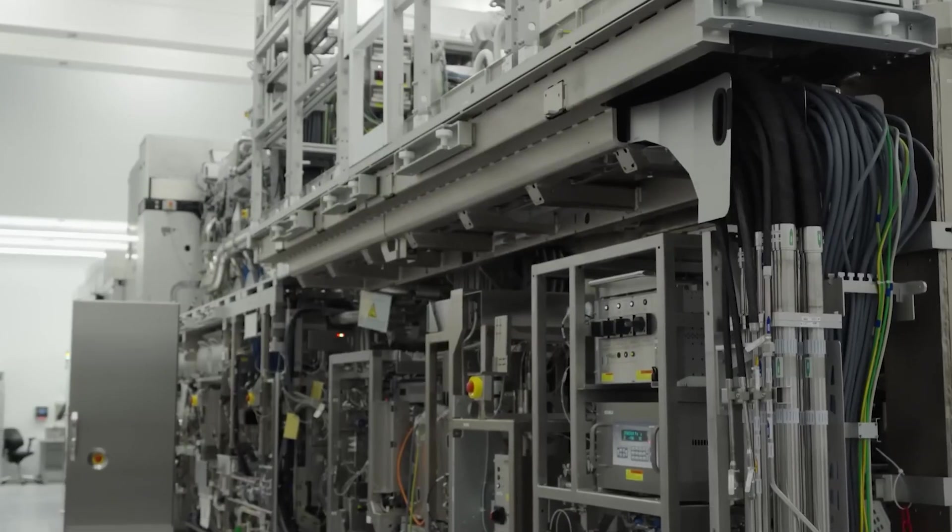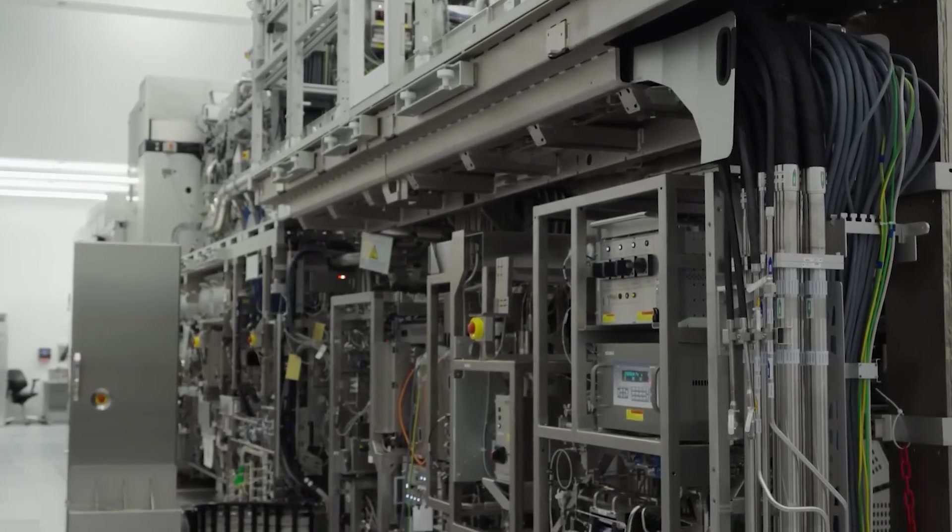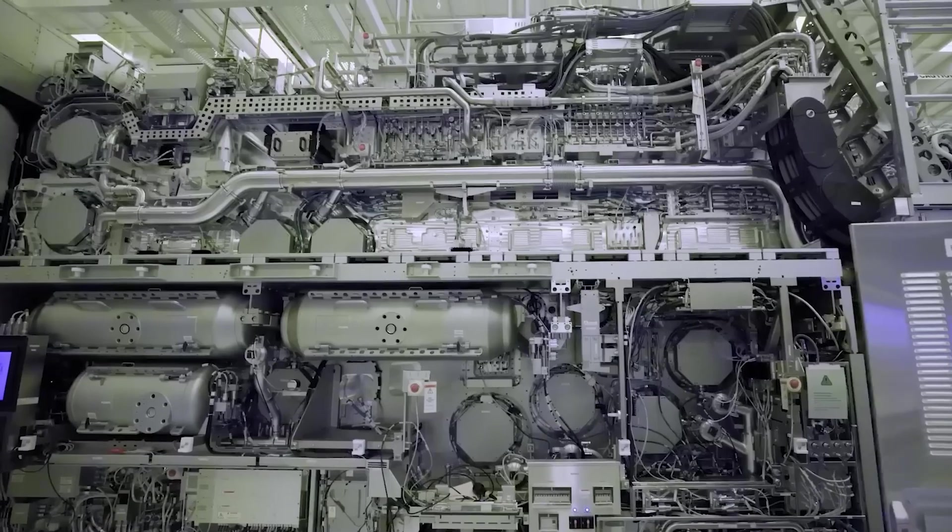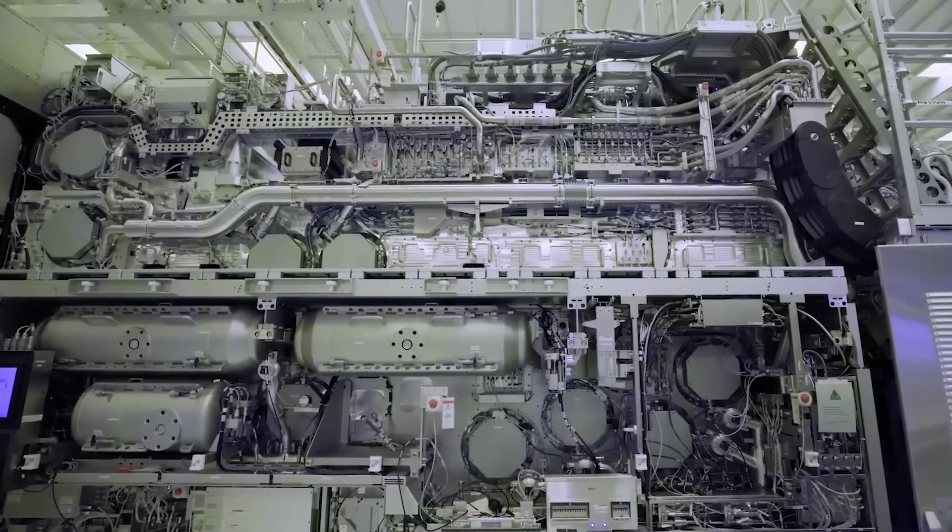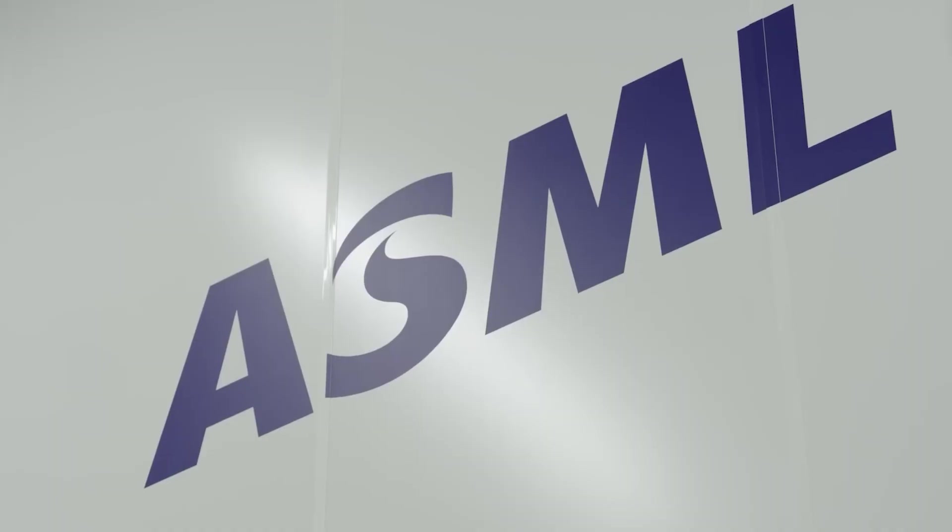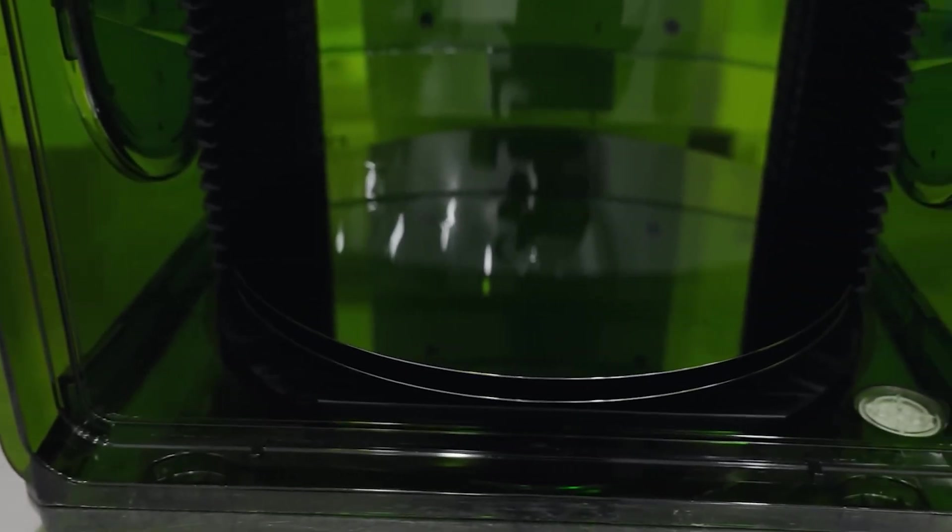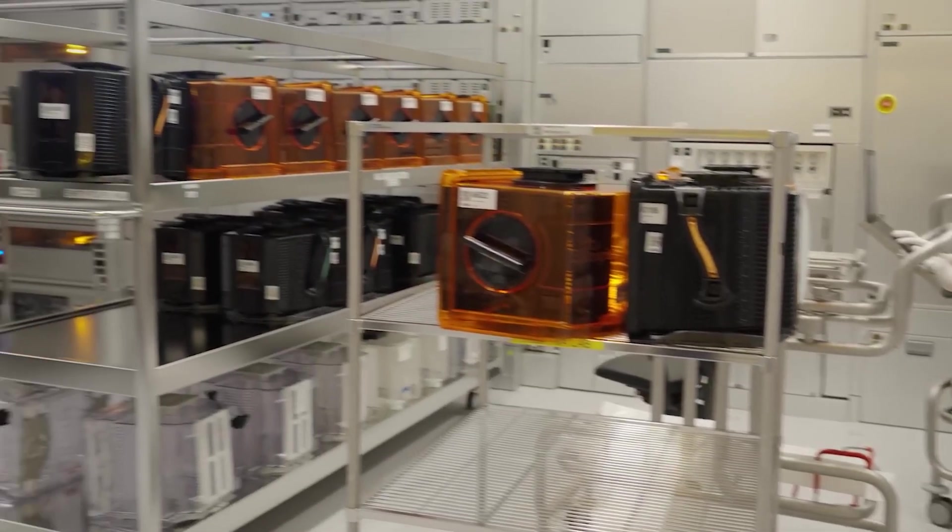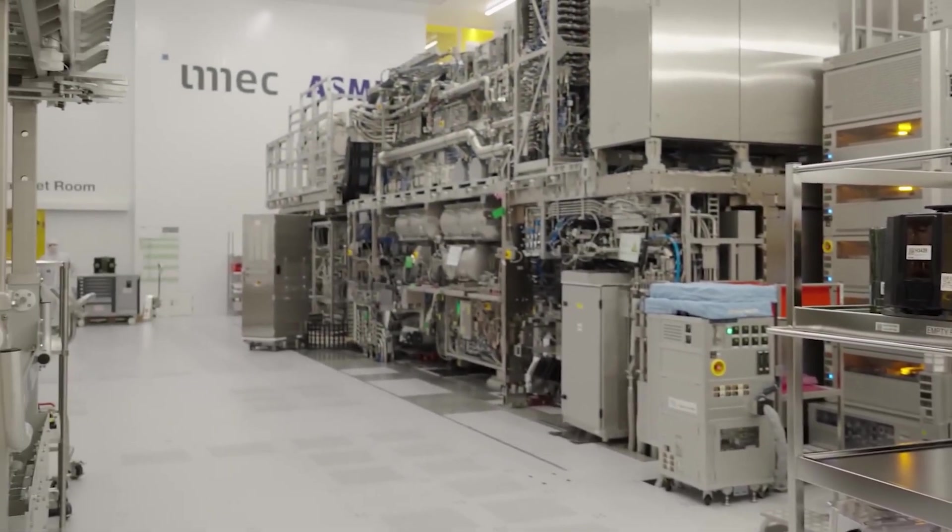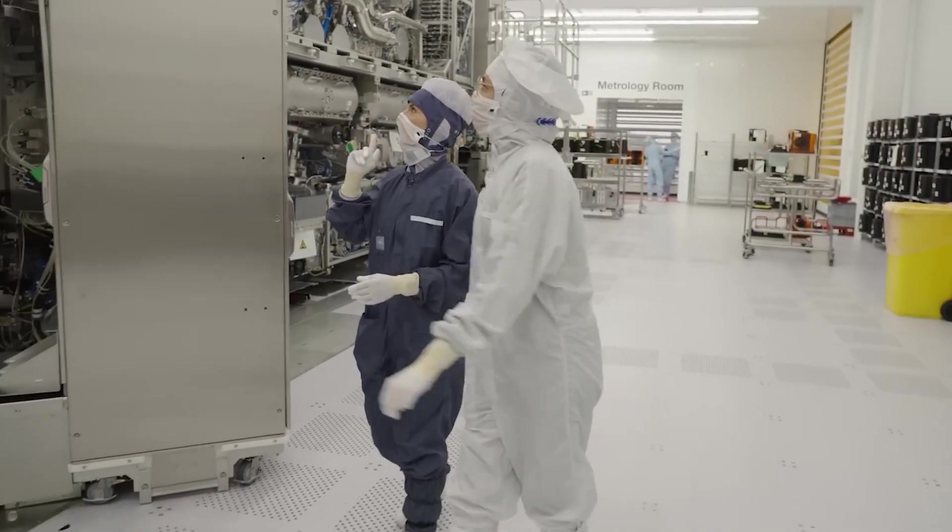The Dutch company produces the EUV lithography machines required to make the world's most advanced processors. These machines are among the most complex devices ever built, with over 100,000 parts and a price tag of around 200 million dollars each. ASML can only build around 30 EUV machines per year. Every advanced fab needs dozens of them. This means the world literally cannot expand advanced chip manufacturing quickly, no matter how much money is invested. The limiting factor is the availability of EUV machines.